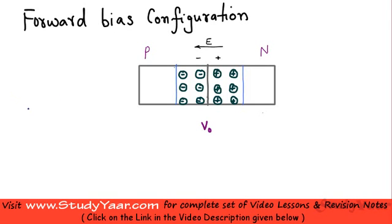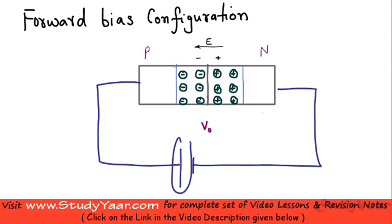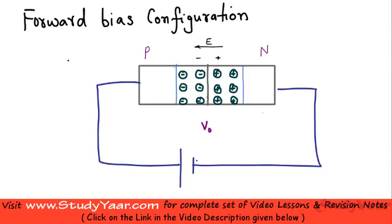Now let's see what happens when we have a forward bias configuration. If I connect a PN junction diode to a DC voltage such that the positive terminal is connected to the P-type and the negative terminal is connected to the N-type, then we have a forward bias configuration. This is also represented symbolically — this is the symbol for your PN junction diode, with this side being P-type and this side being N-type.